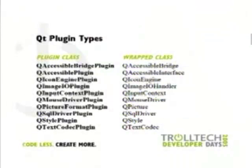Here are the plugin types in Qt4. In Qt3 we had five; in Qt4 we have twice that amount, not even counting Qt Embedded or Qtopia Core plugin classes that provide handlers for input devices. Interesting ones include: the image.io plugin for adding file formats beyond PNG and JPEG; the style plugin for custom styles provided dynamically; and codecs for encoding and decoding different encodings like EUC-JP or Latin-1.